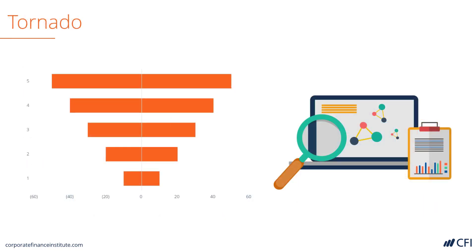This is what's called a tornado chart. It's great for showing the impact of sensitivity analysis on a company. It's really just a stacked bar chart, but what's unique about it is that both sides start at zero and then go either positive or negative to illustrate the impact as being favorable or unfavorable for the business. This is covered in detail in our sensitivity analysis course. It's great for getting quick high-level takeaways about what matters most to a business.